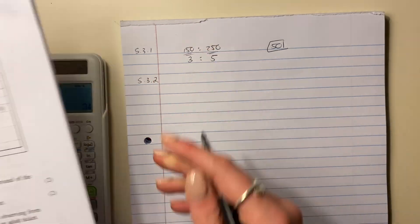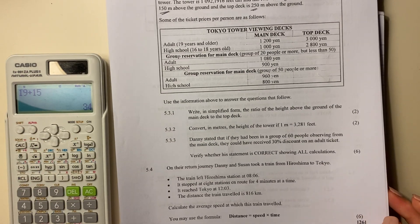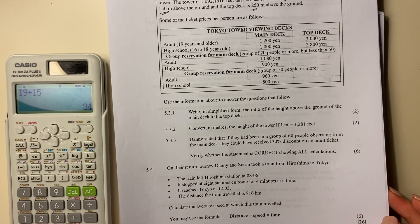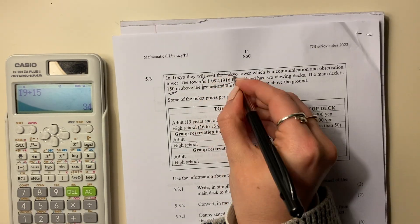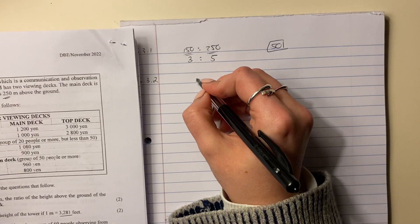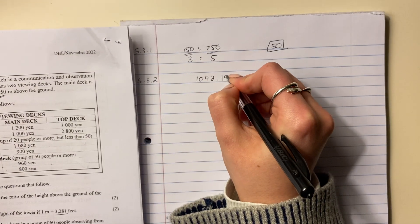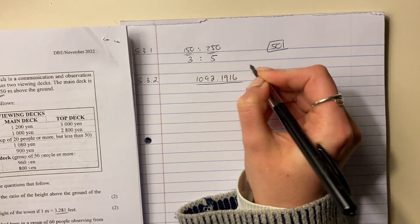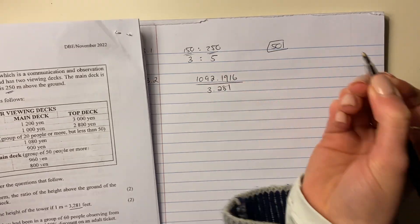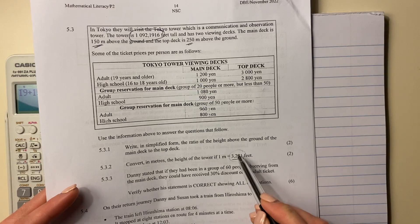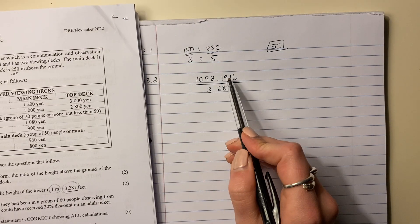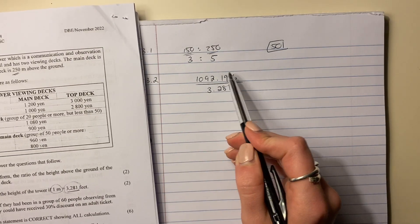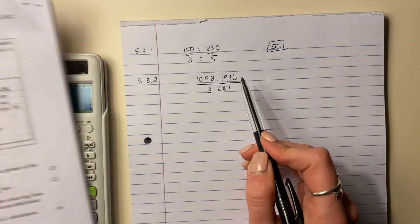Let's now move on to the next question. Convert in meters the height of the tower if 1 meter equals 3.281 feet. How high is the tower? That much. So we can say 1092.1916. And we're going to divide it by that. Because there's more feet in 1 meter than the other way around. So we know that however tall it is, if we convert that to meters, it's going to be less. Because we know that it's going to be less, we're going to divide it.